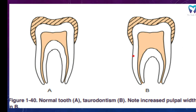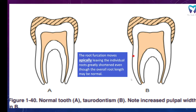If we look at this figure, A is normal teeth and B is Taurodontism. We can easily spot the differences here. The pulp width is more, the furcation area is shifted apically towards the apex. The root length and the crown are relatively the same in both A and B, but the individual root height is less in figure B. So the root furcation moves apically, leaving the individual roots greatly shortened, even though the overall root length may be normal.